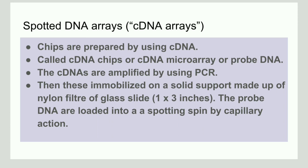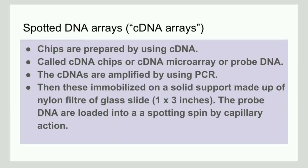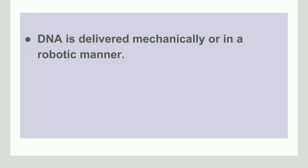Spotted DNA arrays are also known as cDNA arrays or cDNA chips. Here, the chips are prepared using cDNA, which is amplified by PCR and then immobilized on a solid support — usually a nylon fiber or glass slide. The probe DNA is loaded into a spotting pin by capillary action. In cDNA microarray, DNA is delivered either mechanically or using robotics.